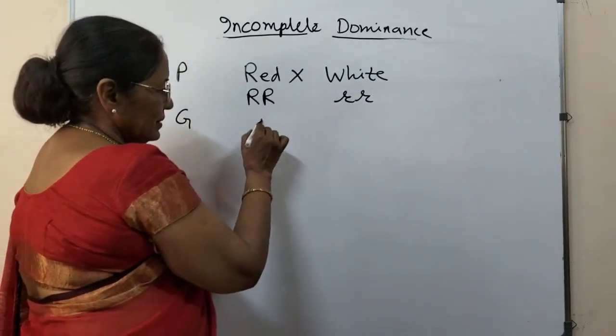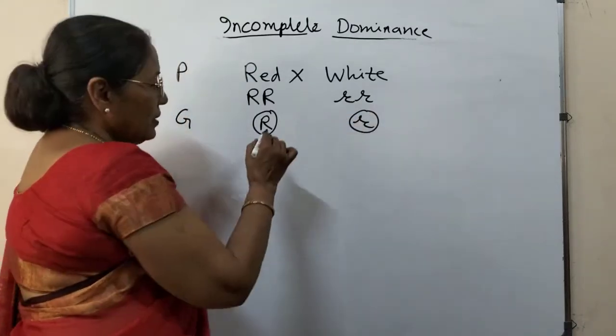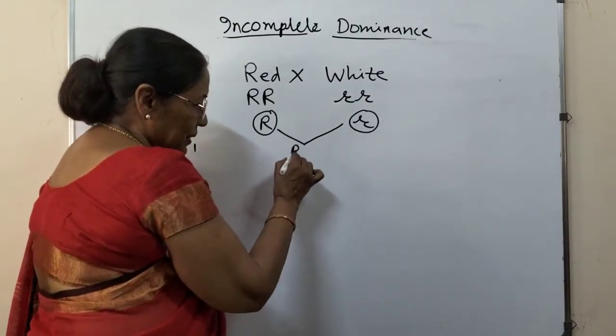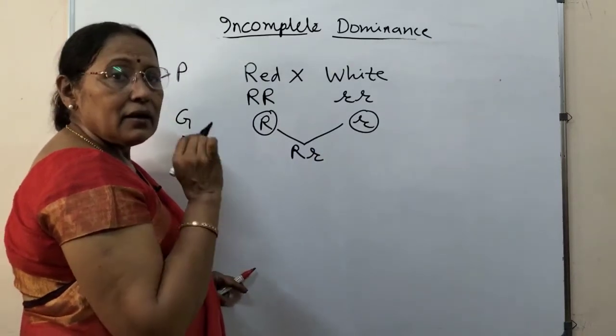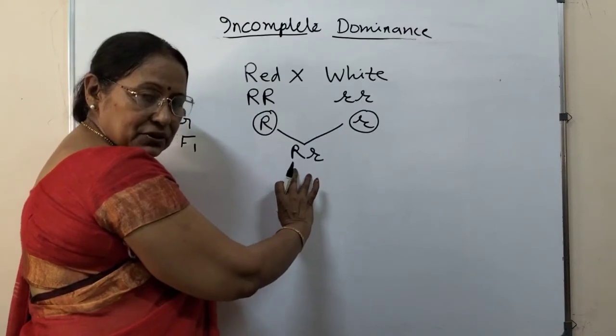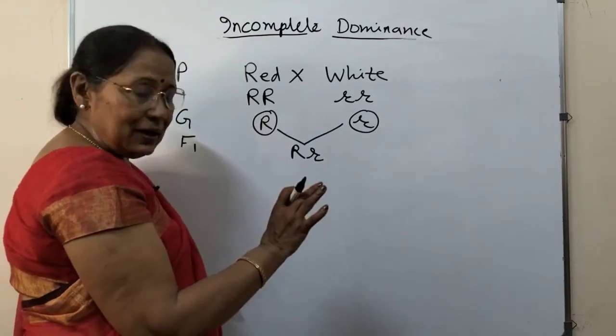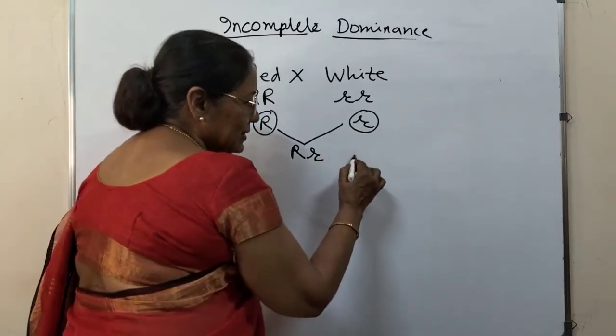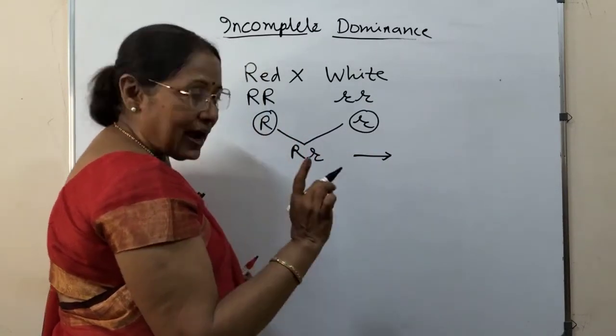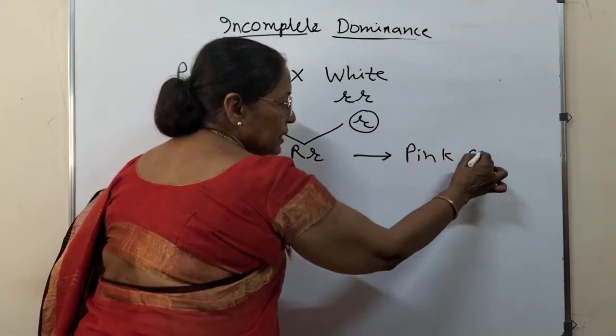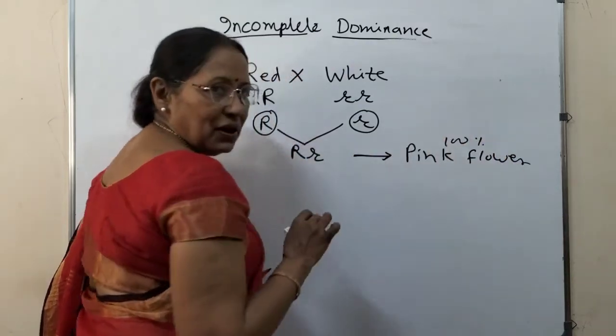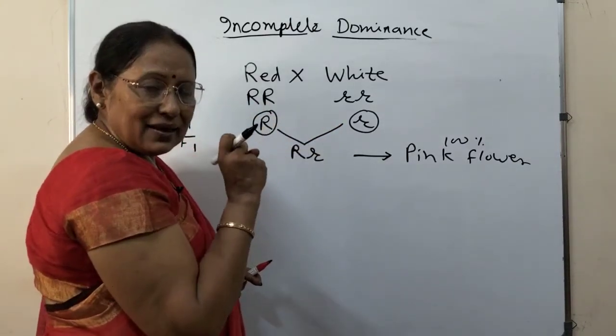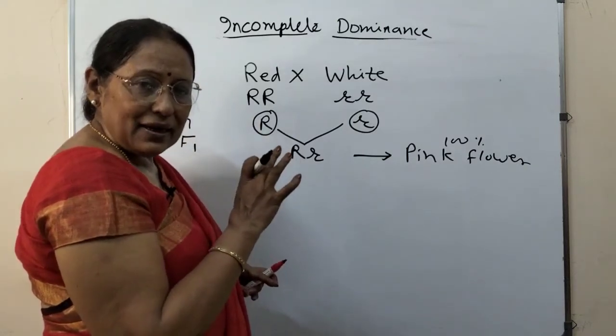When they form gametes, this is capital R, this one small r. When these two fuse to form the F1 offspring, then F1 offspring are heterozygous, having both different types of factors which we now call alleles. This does not follow Mendel's law of inheritance. This is neither red nor white—these are 100 percent pink flowers. Wherever it becomes heterozygous, it will be an intermediate character of the two.